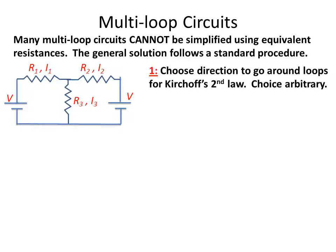The first step is to choose the direction to go around the loops for Kirchhoff's second law. The choice is arbitrary, so often I just use clockwise for both of them. The direction is indicated by these green arrows making a loop.